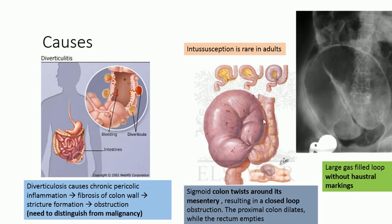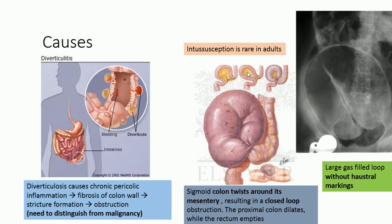This is a sigmoid colon volvulus. On X-ray, the dilated part points towards the right upper quadrant. The sigmoid colon twists around its mesentery, resulting in a closed loop — both ends come together. The proximal colon dilates while the rectum empties. There is no obstruction to the rectum, but the proximal colon slowly dilates, causing obstruction.